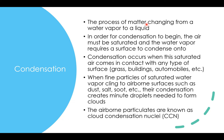Condensation is the process of matter changing from a water vapor — a gas — to a liquid. In order for condensation to begin, the air must be saturated, and the water vapor requires a surface to condense onto. We talk about cloud condensation nuclei, CCNs. The atmosphere has impurities in it: smoke from a forest fire, dust kicked up into the air, sea salt coming off rougher seas. These impurities are what water vapor clings onto in order to form clouds.